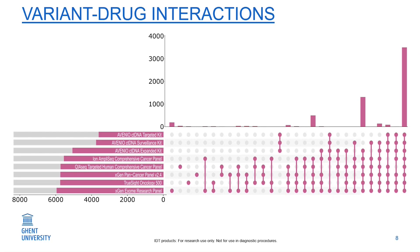The other half of the variant-drug interactions not covered by these panels are expression level variants. These variants could not be detected with genome sequencing; therefore you need RNA sequencing or proteome analysis.